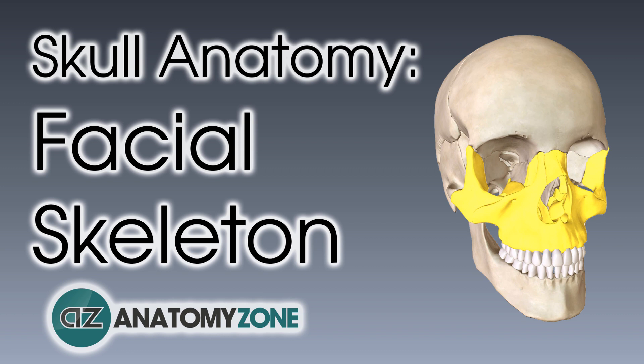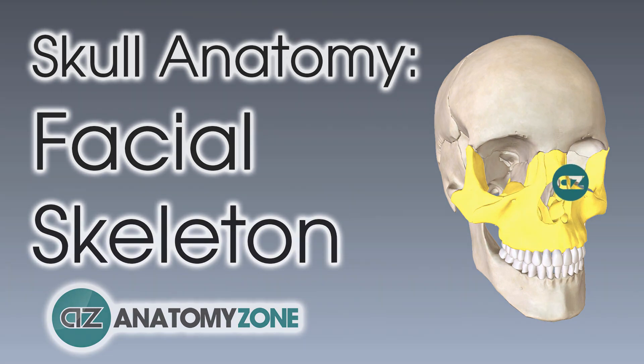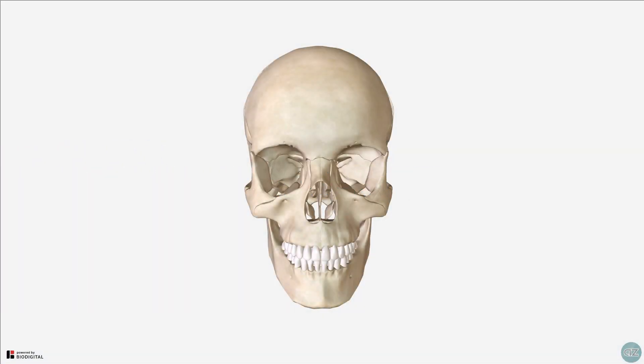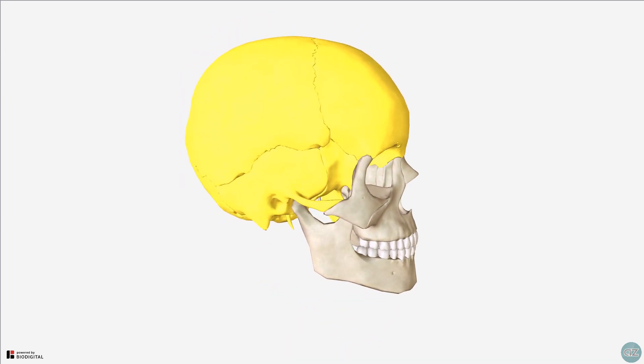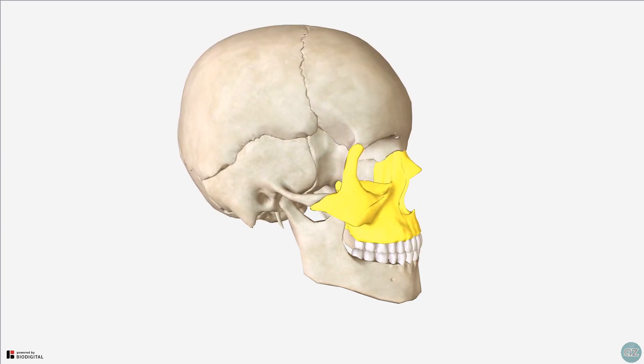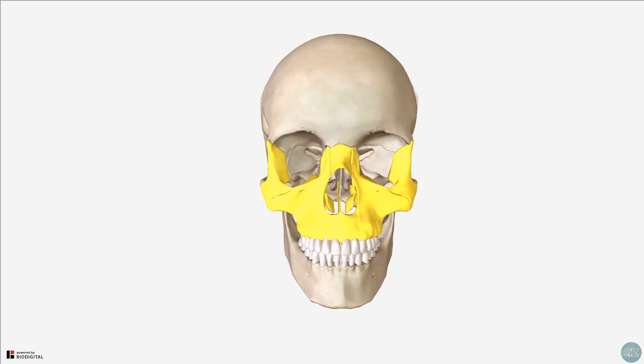Hi, this is Peter from Anatomy Zone, and in this tutorial we're going to take a look at the anatomy of the viscerocranium. We have previously taken a look at the anatomy of the calvaria, and in this tutorial we'll be learning about the bones which make up the viscerocranium, also known as the facial skeleton.